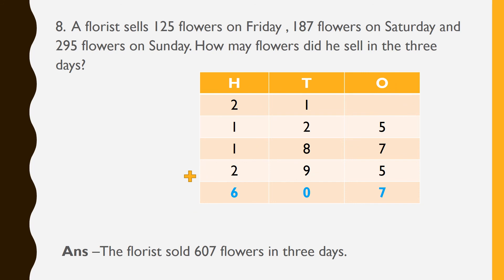This is the 8th question from exercise number 6: a florist sells 125 flowers on Friday, 187 flowers on Saturday, and 295 flowers on Sunday. How many flowers did he sell in 3 days? We have to add the flowers sold on Friday, Saturday, and Sunday. Therefore, we have to add these 3 numbers: 125 plus 187 plus 295.